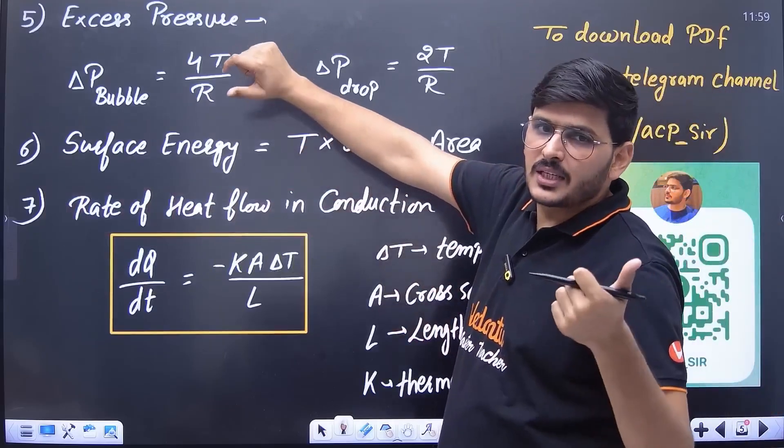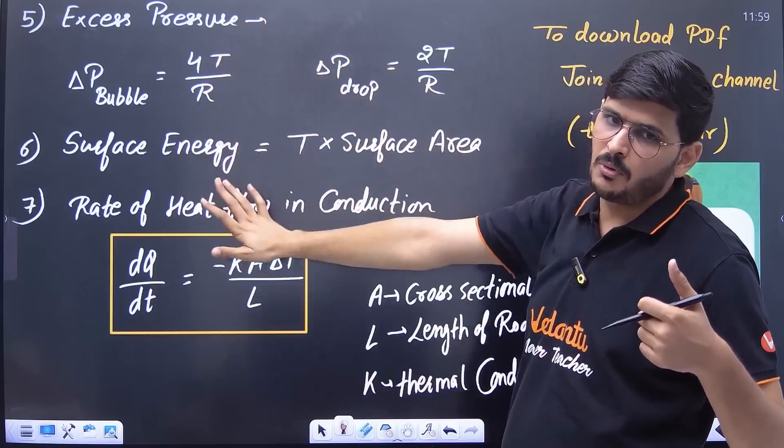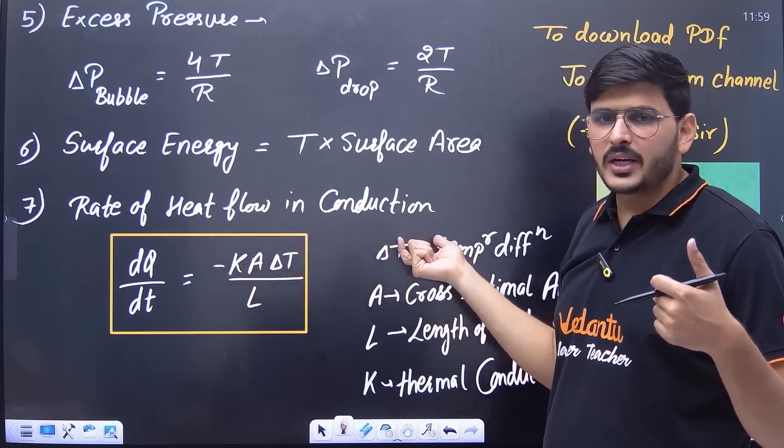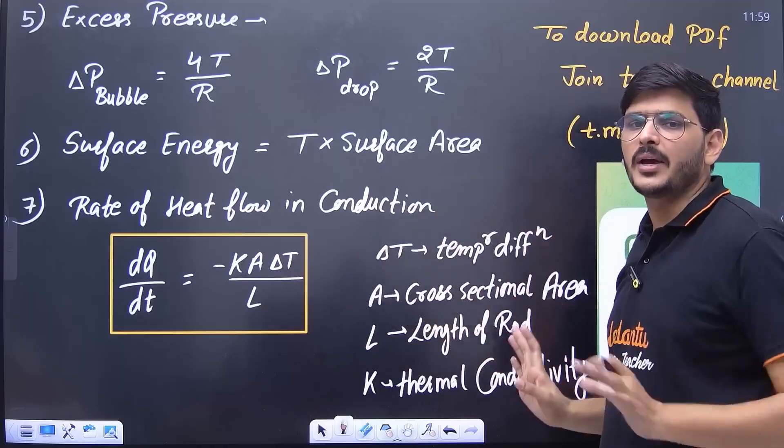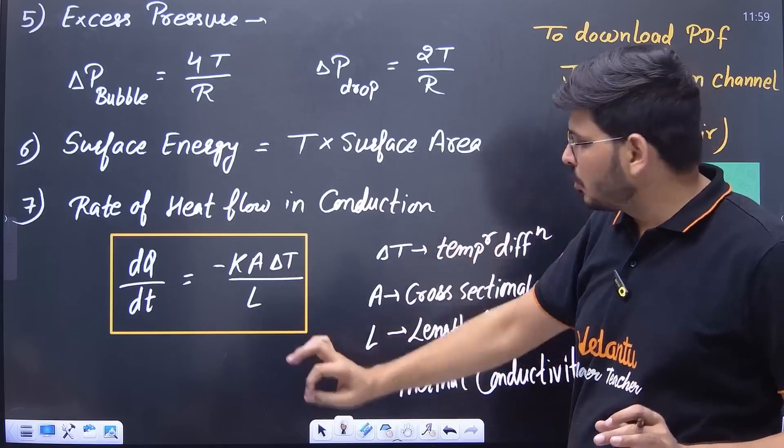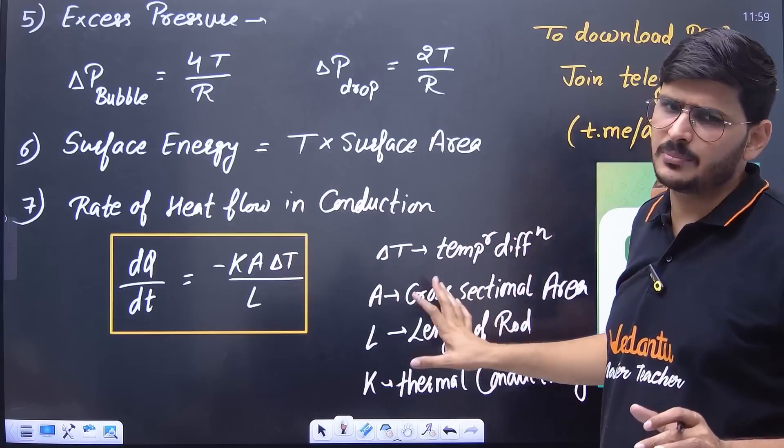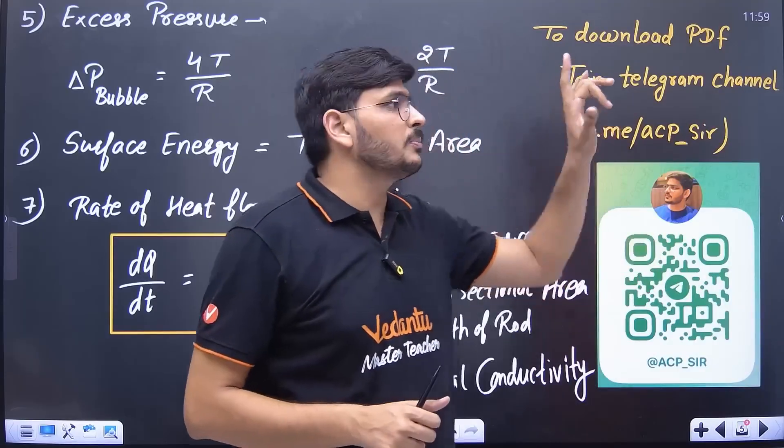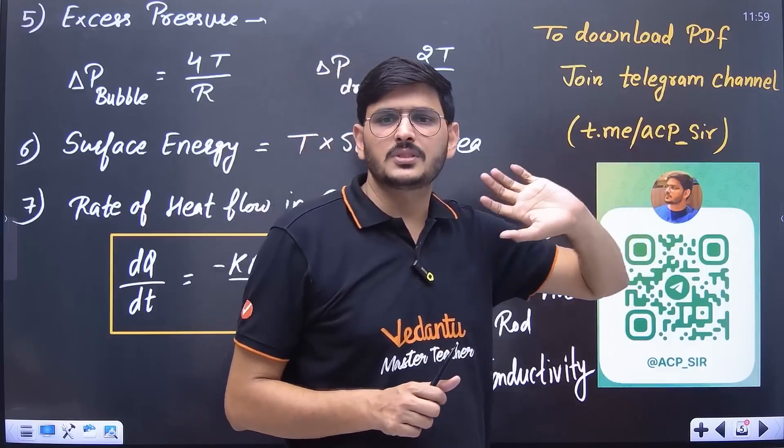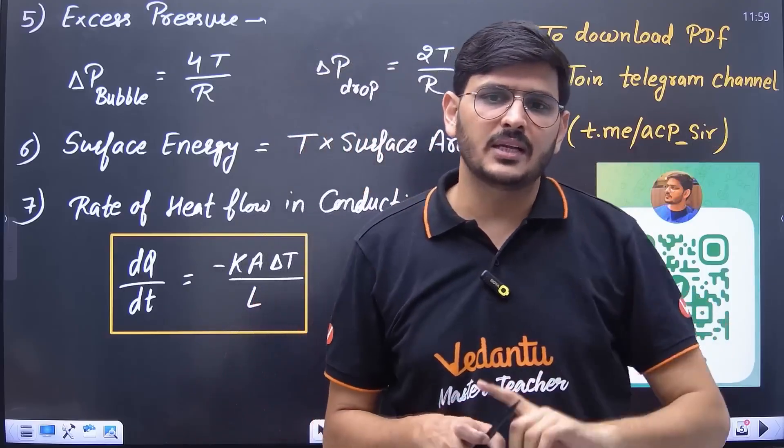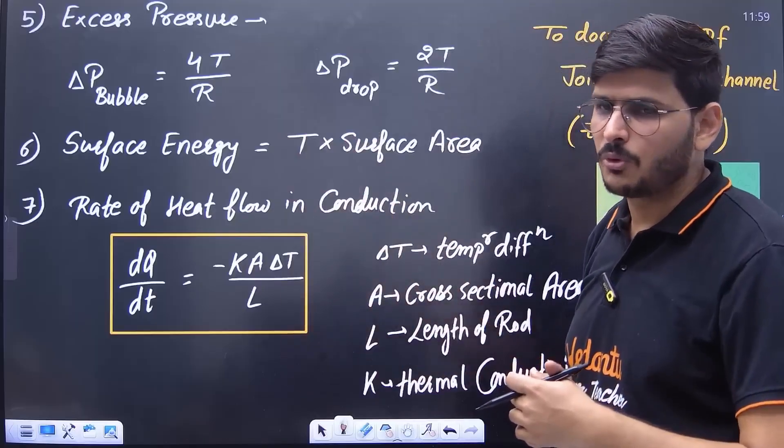Let's come back. For example, if we talk about fluid, then apart from those two formulas, there are two formulas of excess pressure and surface energy. This is also very important. Similarly, the formula of rate of heat flow in conduction. This formula will mostly be useful for you in conduction. Rate of heat flow is KA delta T/L. What is delta T here? What is A? What is L? What is K? Everything is written here. I was talking about this PDF. You will get the complete PDF on this telegram channel. You can also join from here or search this telegram channel in the name of ACPSIRS official. You will get this PDF there and you will get a lot of other things there, notes etc. properly.